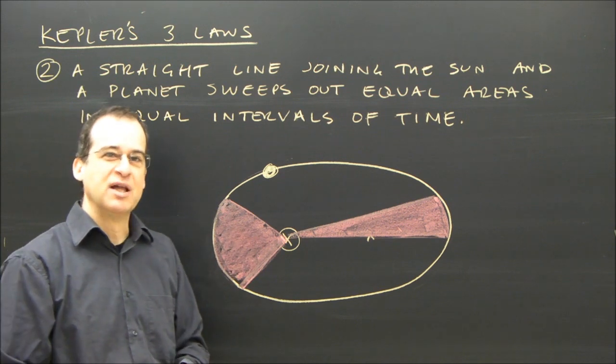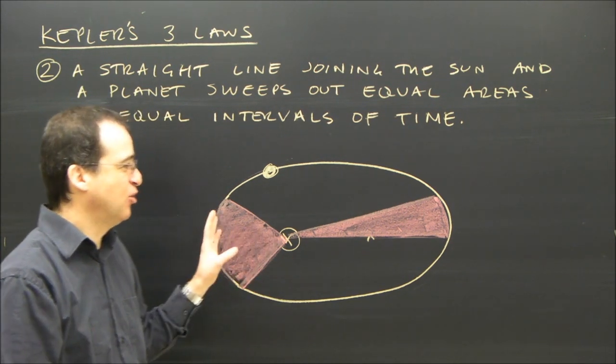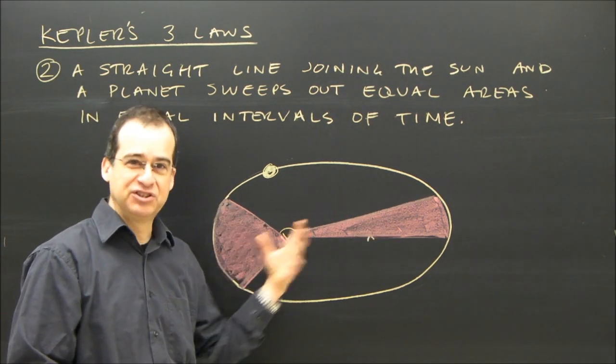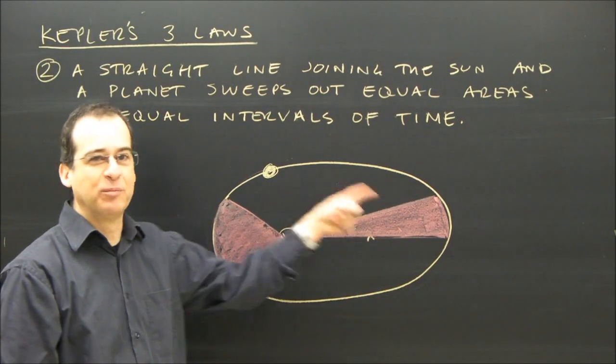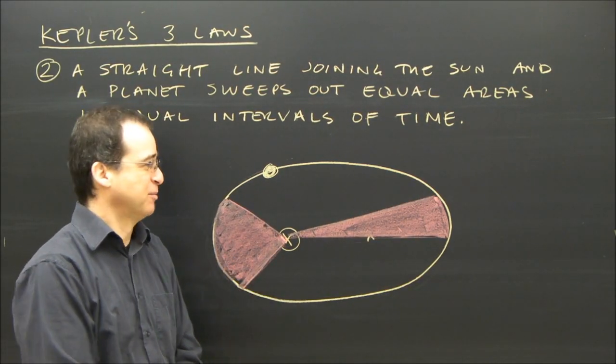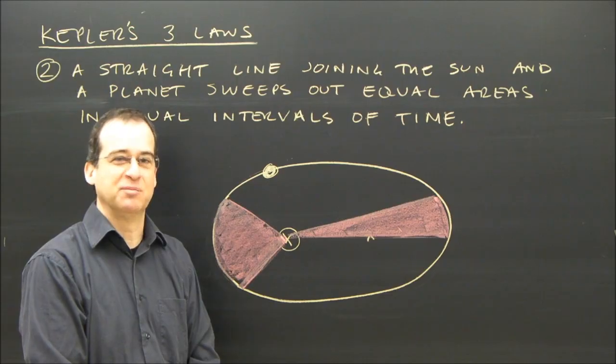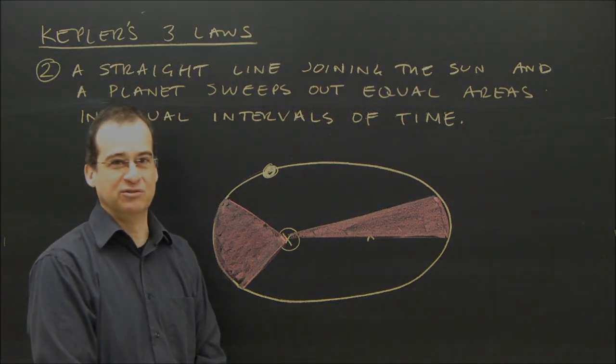And he didn't understand why this was, but the important thing was it showed that there is some kind of relationship of the planet's orbit around the sun. And so there must be some mathematical relationship that someone will figure out, and that someone was Newton.